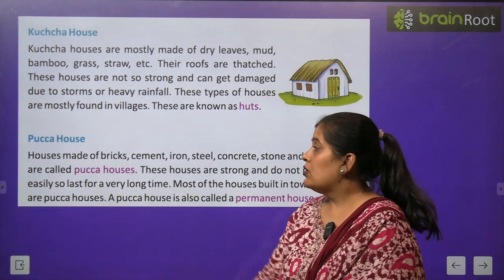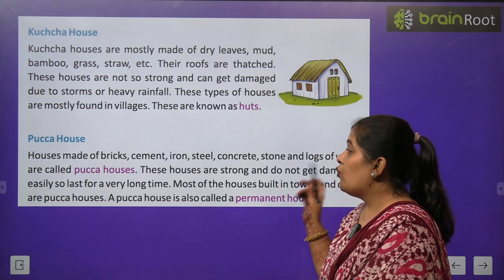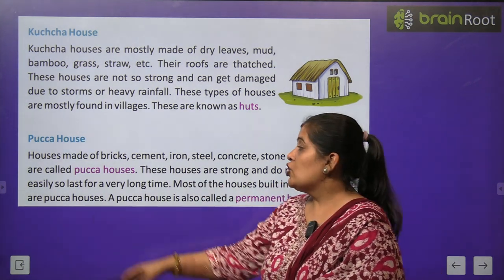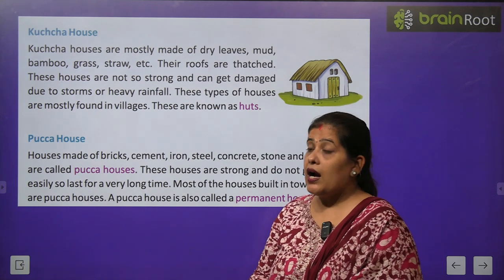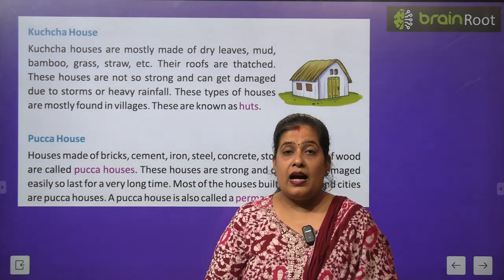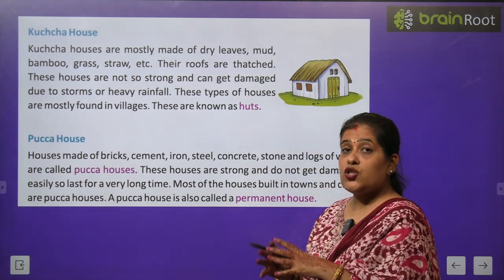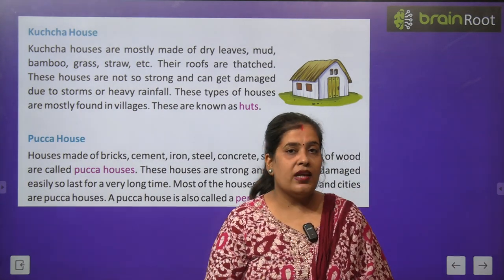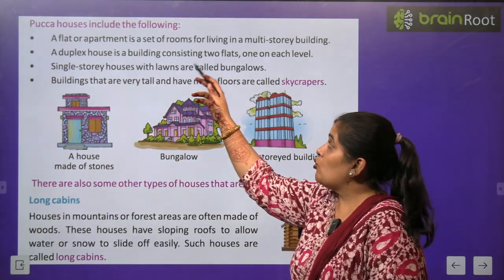Now we will learn about पक्का house. Houses made of brick, cement, iron, steel, stone and logs of wood are called पक्का house. These houses are strong and do not get damaged easily, so they last for a very long time. Most of the houses built in towns and cities are पक्का houses. A पक्का house is also called a permanent house. पक्का house ईंट, cement, steel, glass और लोहे से बनता है. ये houses बहुत ज्यादा strong होते हैं और जल्दी damage नहीं होते. पक्का house को हम permanent house भी कहते हैं.